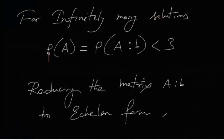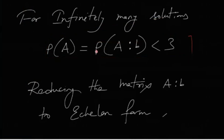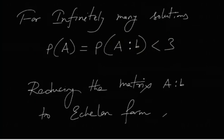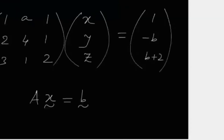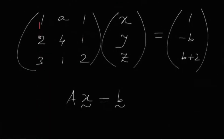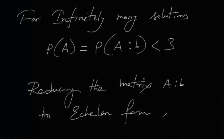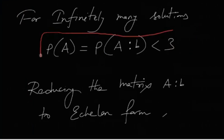For infinitely many solutions, the condition that must hold is: rank of A must equal rank of the augmented matrix [A|b], and this common rank must be less than 3 — where 3 is the number of columns in the coefficient matrix. So the condition is rank(A) = rank([A|b]) < 3. Since it has already been told that the system has infinitely many solutions, this condition must be true.